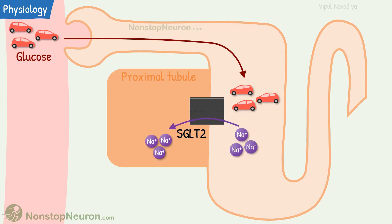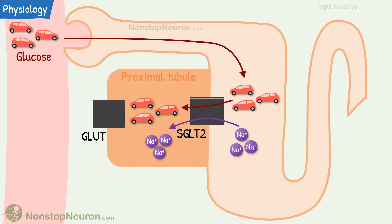It moves sodium down the concentration gradient. Energy from this transport is utilized to move glucose from the lumen into the cell. Basolateral exit occurs through a glucose transporter by facilitated diffusion.